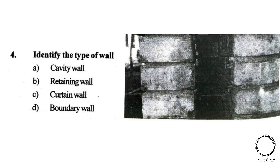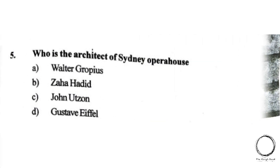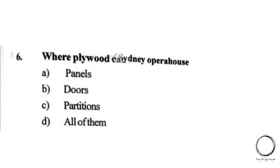Identify the type of wall shown in the image: A) Cavity wall, B) Retaining wall, C) Curtain wall, D) Boundary wall. The right answer is A, Cavity wall. Next: who is the architect of Sydney Opera House? Options: A) Walter Gropius, B) Zaha Hadid, C) Jorn Utzon, D) Stei Wifel. The right answer is C, Jorn Utzon.